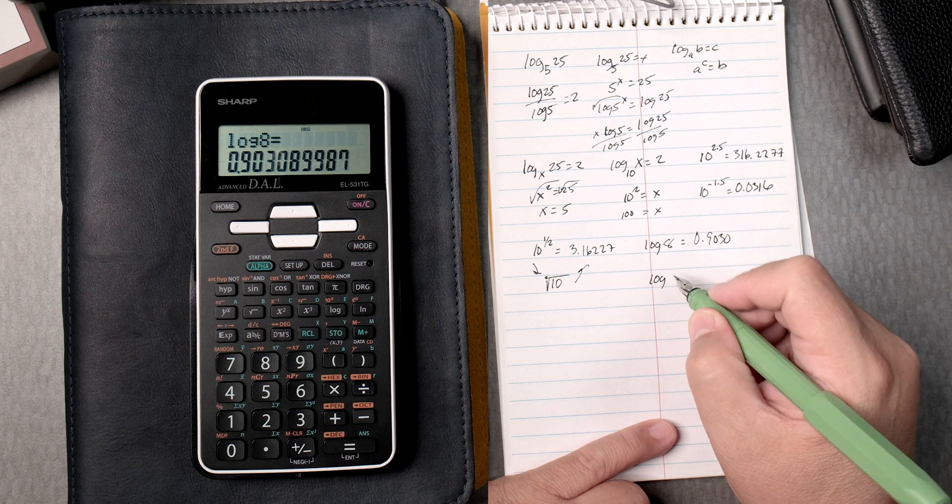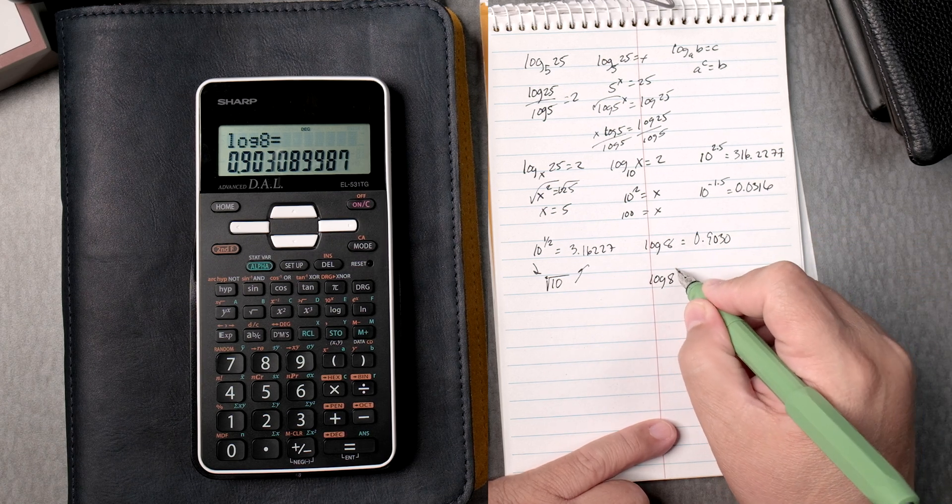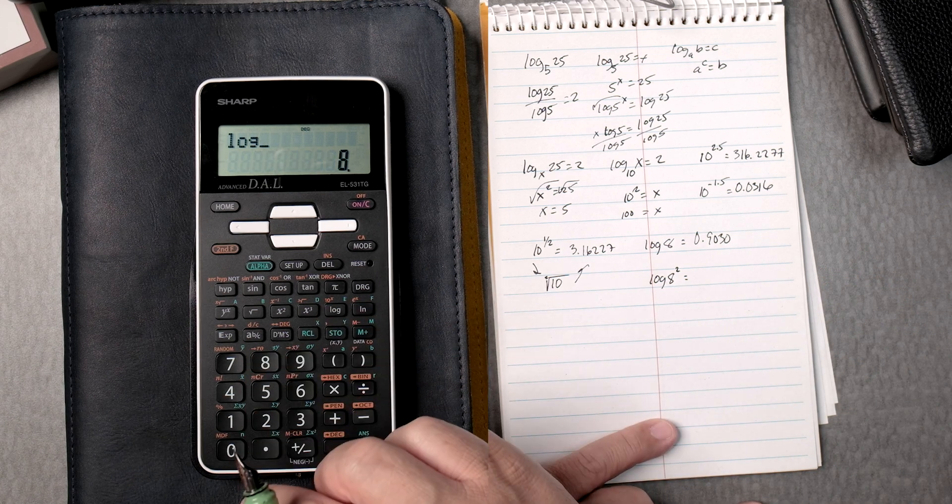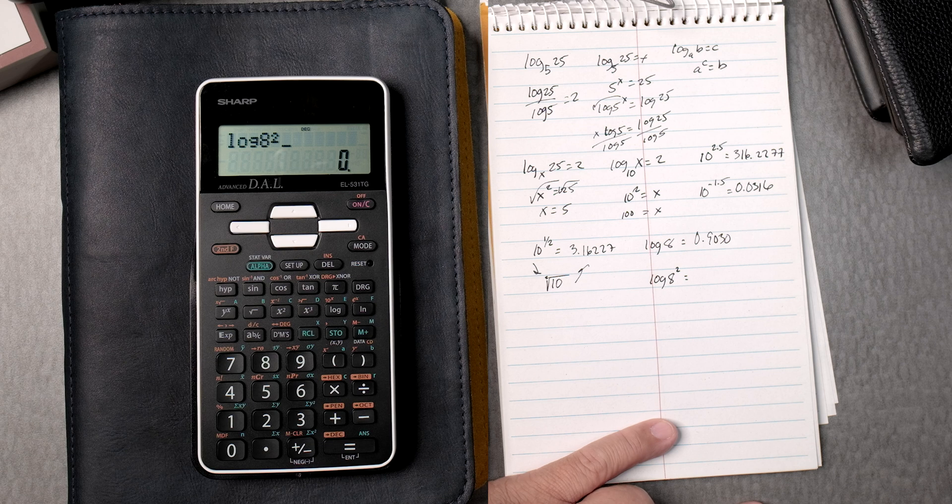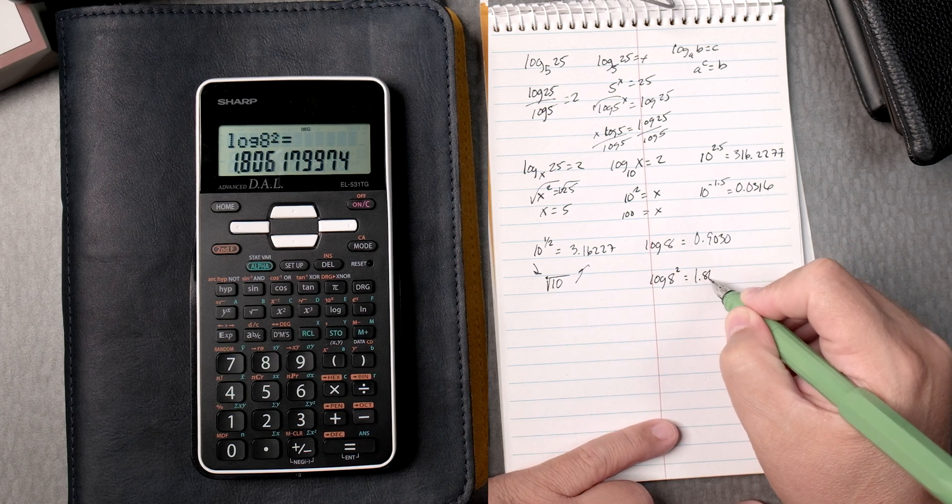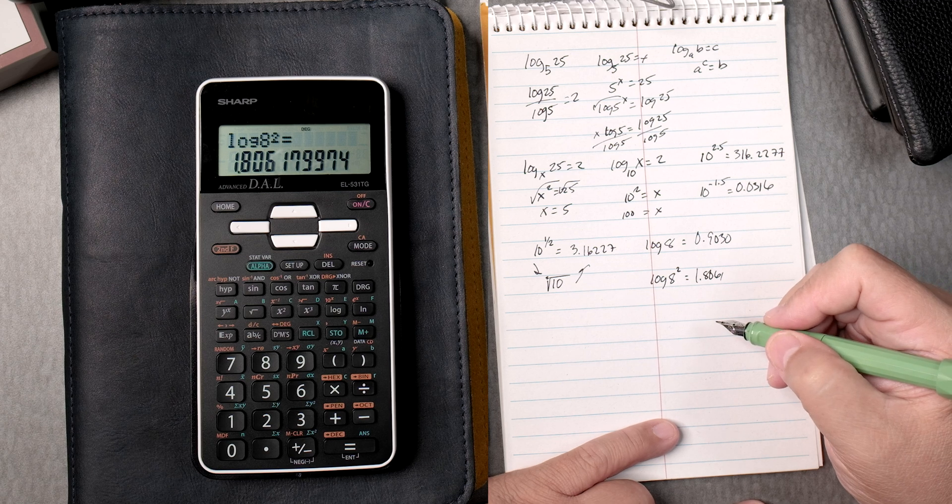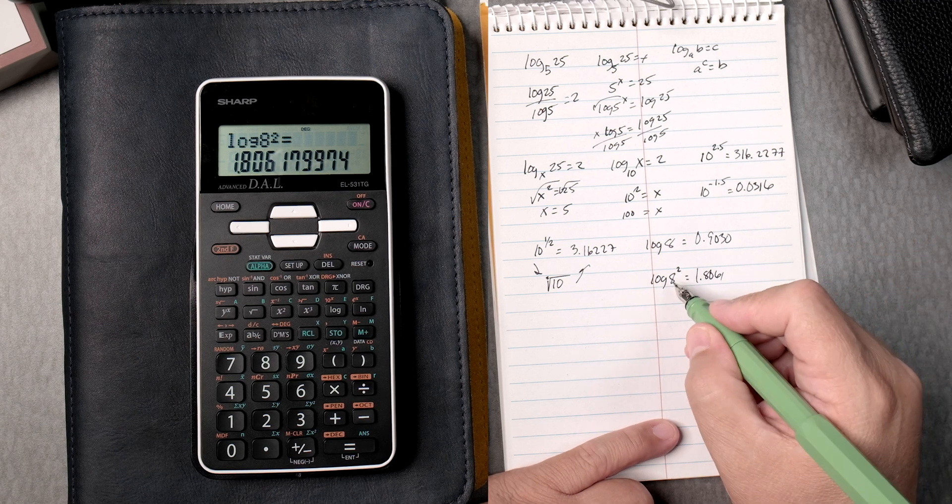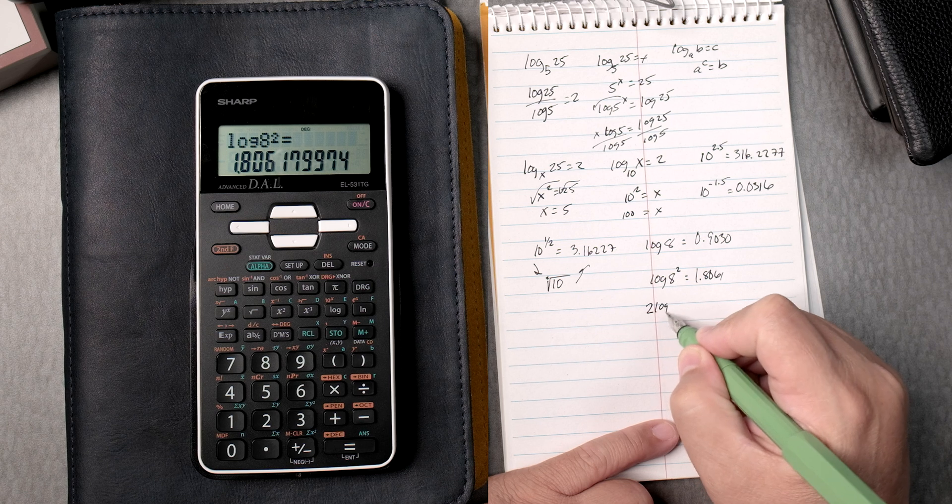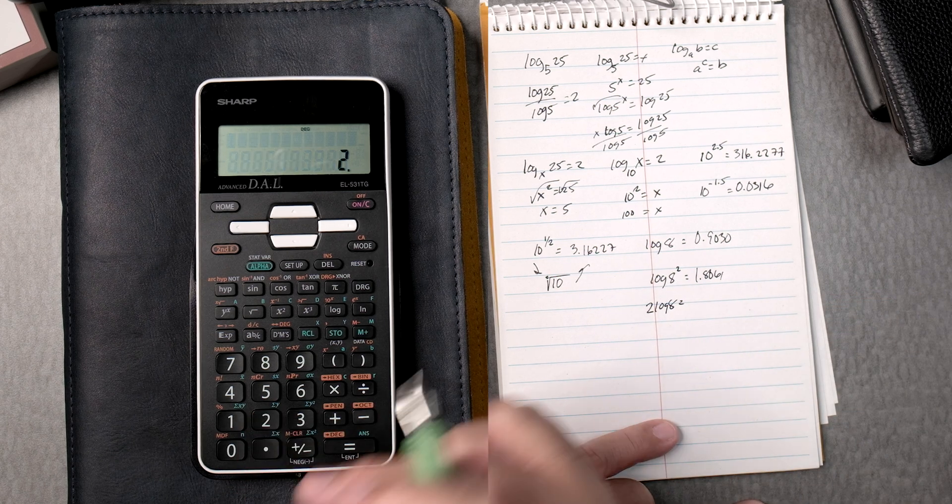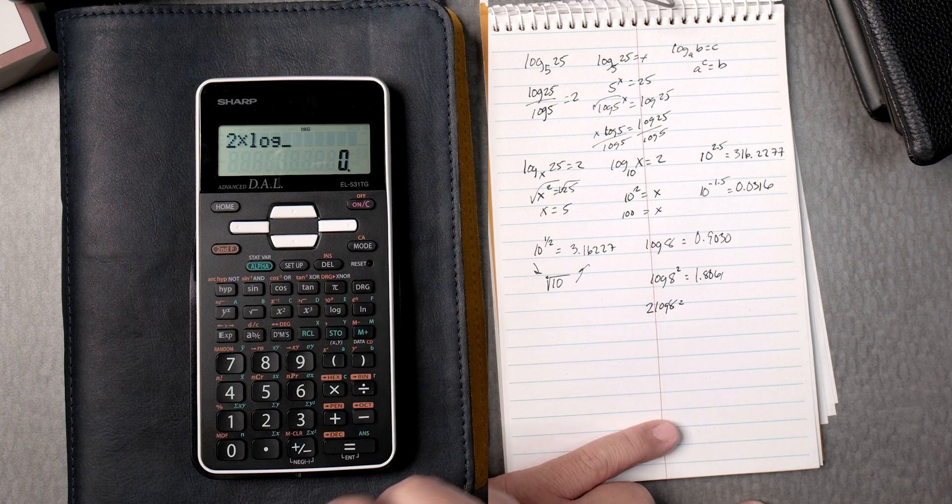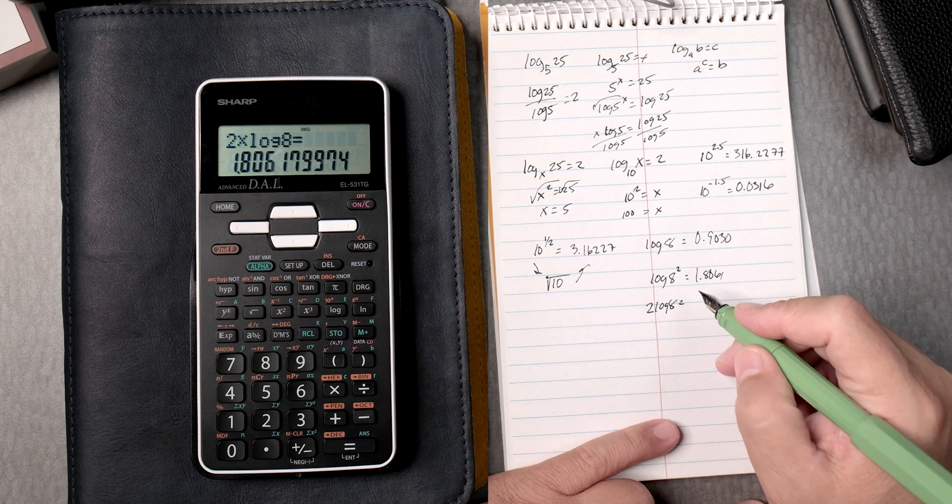How about the log of 8 squared? So we can take the log 8 and we square it, you can see that, equals, and we get 1.8061. Of course it keeps on going. There's a rule that says that you can drop that 2. So that's 2 times the log of 8. So it'll be 2. Then you can say times log 8 equals, same answer.